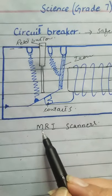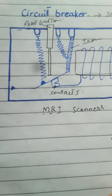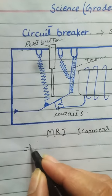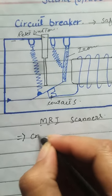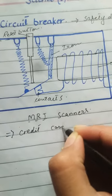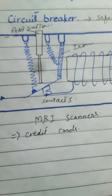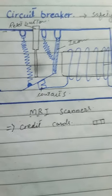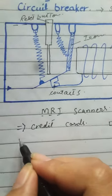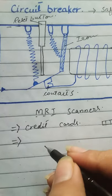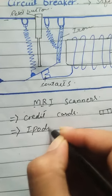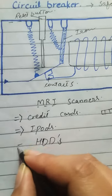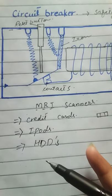Electromagnets are also used in MRI scanners — that is, magnetic resonance imaging scanners. They are also used in credit cards, where the strip stores bank account details of the person. Electromagnets are also used in iPods to play music, and in HDDs. These were the uses of electromagnets.